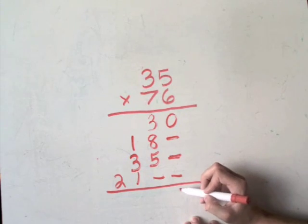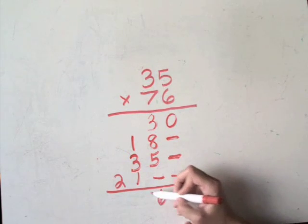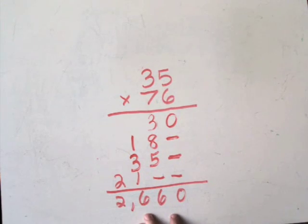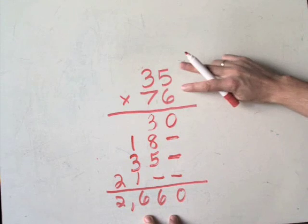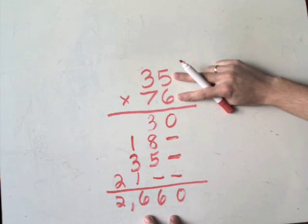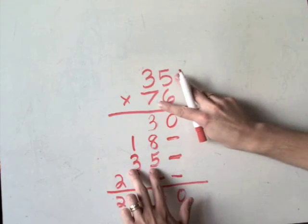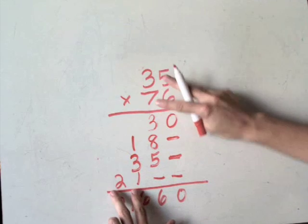Again, the answer is exactly the same as it was before. But this time, if you made a mistake, you could go back through and look quickly to see where your problem was. 6 times 5 is 30, 18, 35, and 21.